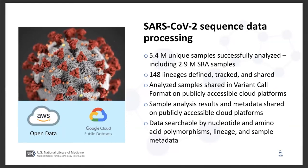5.4 million unique samples have been successfully analyzed, including 2.4 million SRA samples. Over 148 lineages have been defined, tracked, and shared with the community. Analyzed samples are shared in variant call format on publicly accessible cloud platforms, allowing people to ask questions like: does the sequence data cover the entire genome, and how many reads actually support a given mutation call? This is really impactful because people can use these metrics to decide what data is best for their use cases. Sample analysis results and metadata are also shared in publicly accessible cloud platforms, searchable by nucleotide and amino acid polymorphisms, as well as lineages and sample metadata.